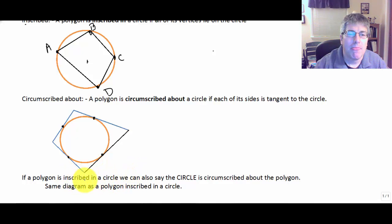We could also say if a polygon is inscribed in a circle, then we can say the circle is circumscribed about the polygon.